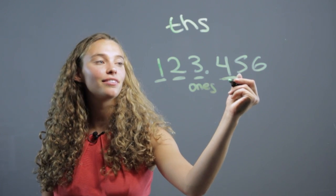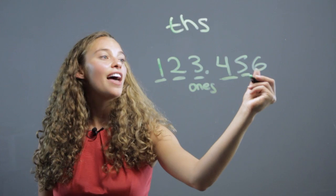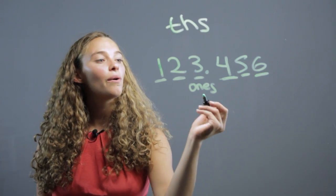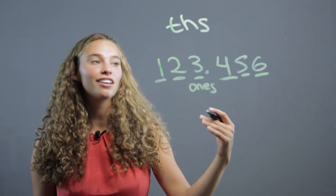So the four is the tenths, the five is the hundredths, and the six is the thousandths. So it's the same once you skip the ones. It's the same counting, but then again, you add the th.